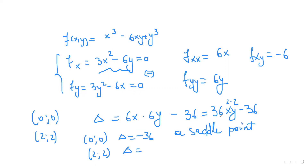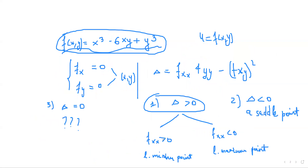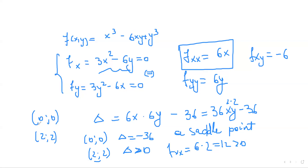For the point (2, 2), delta equals 36·(2)·(2) minus 36, which gives 144 minus 36 equals 108, a positive number. Since delta is greater than zero, the point is an extreme point. Now checking f_xx at x equals 2: f_xx equals 6·(2) equals 12, which is positive. Since f_xx is greater than zero, the point (2, 2) is a local minimum. So our conclusions are: (0, 0) is a saddle point, and (2, 2) is a local minimum point.